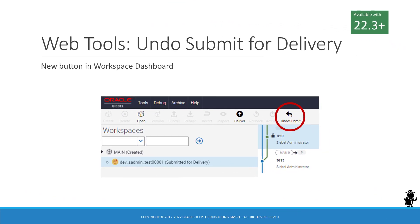Siebel Web Tools continues to gain on the classic Siebel Tools in the race for 100% parity. In 22.3, it's the addition of the Undo Submit button to the Workspace dashboard. Developers can now invoke the Undo Submit for Delivery operation from both Siebel Tools and Siebel Web Tools.